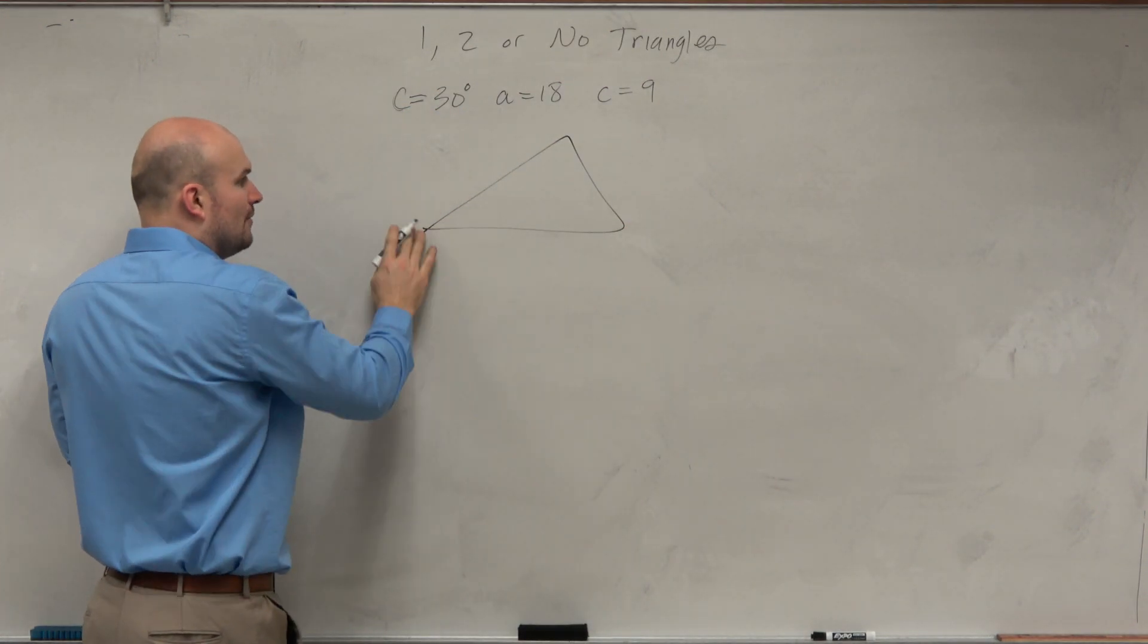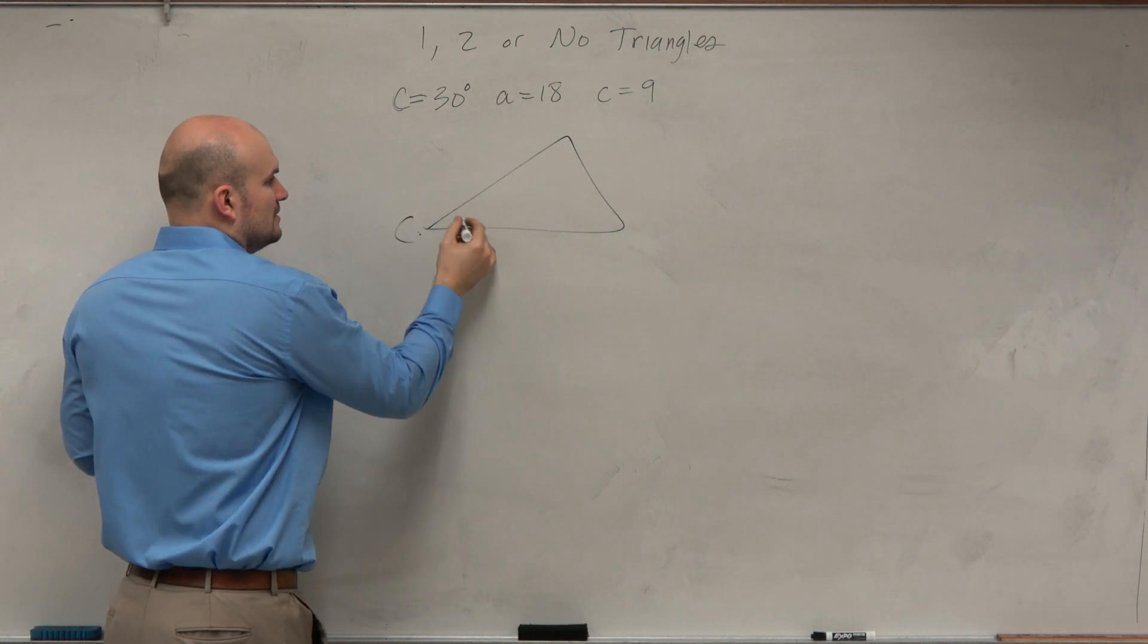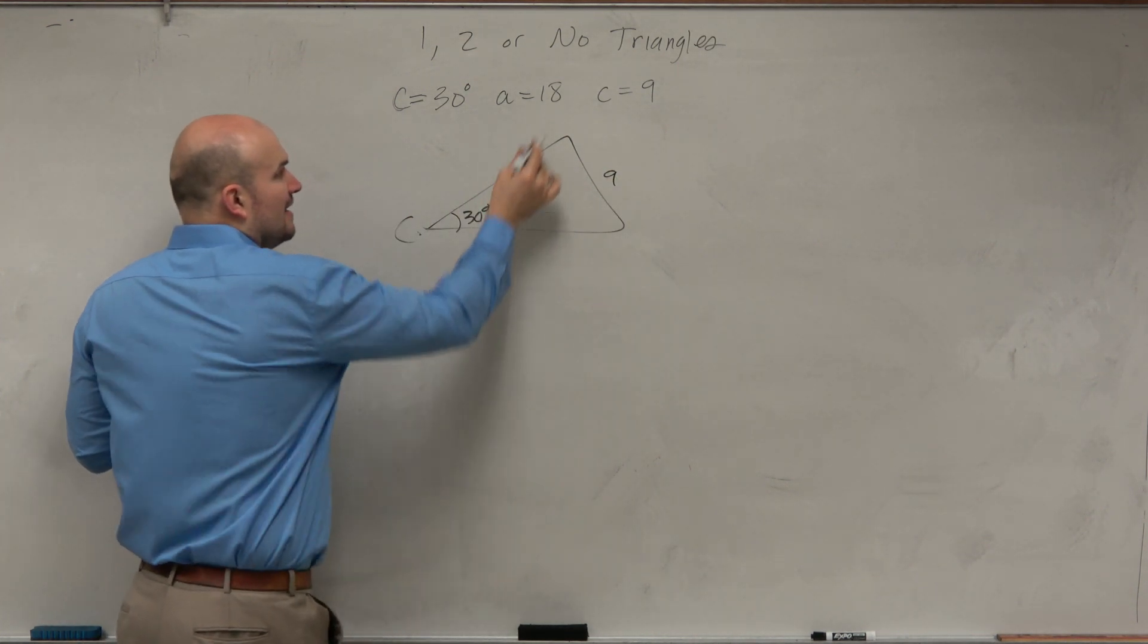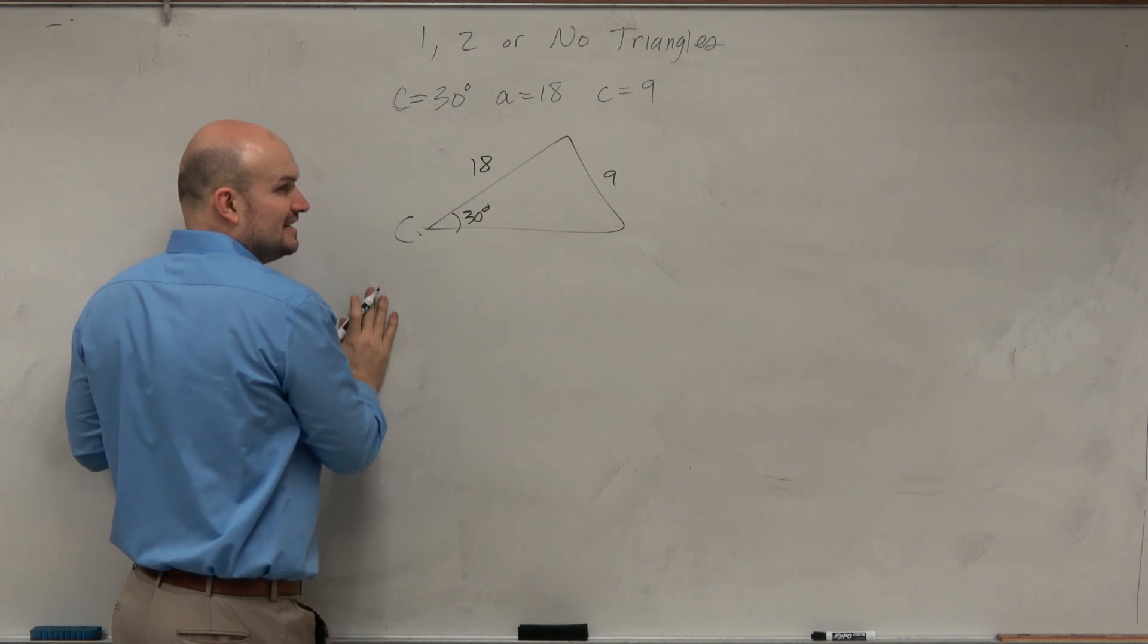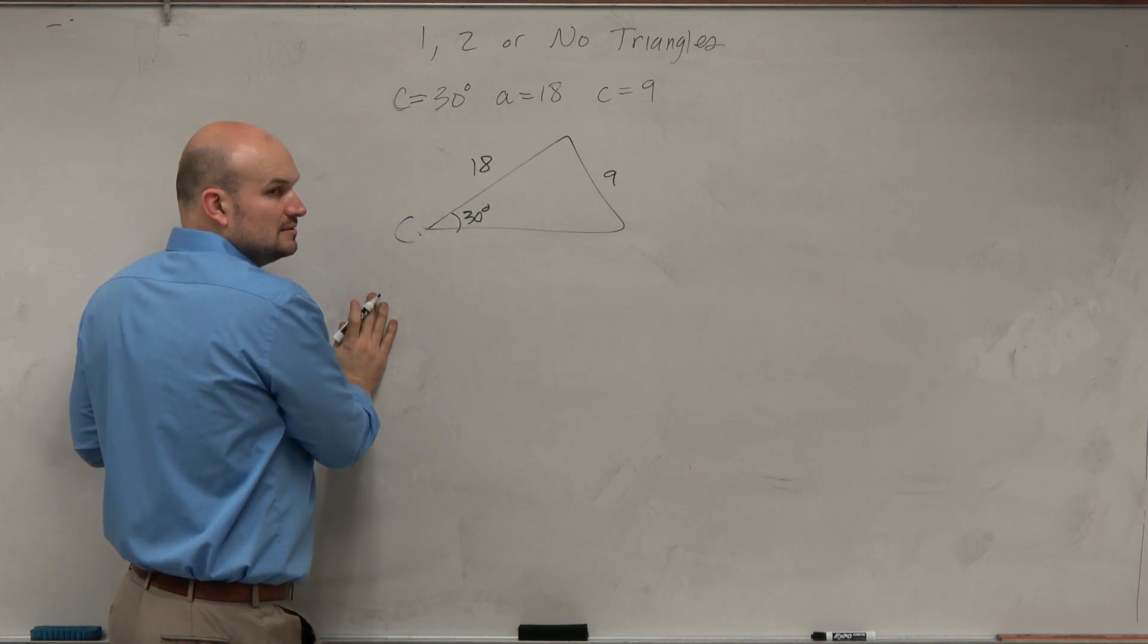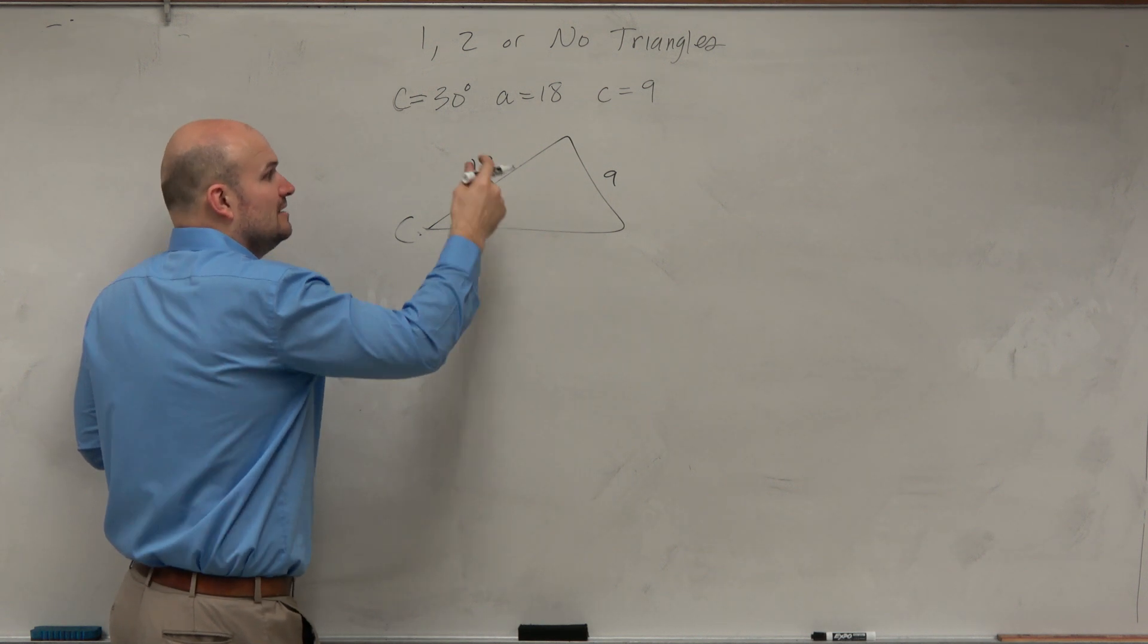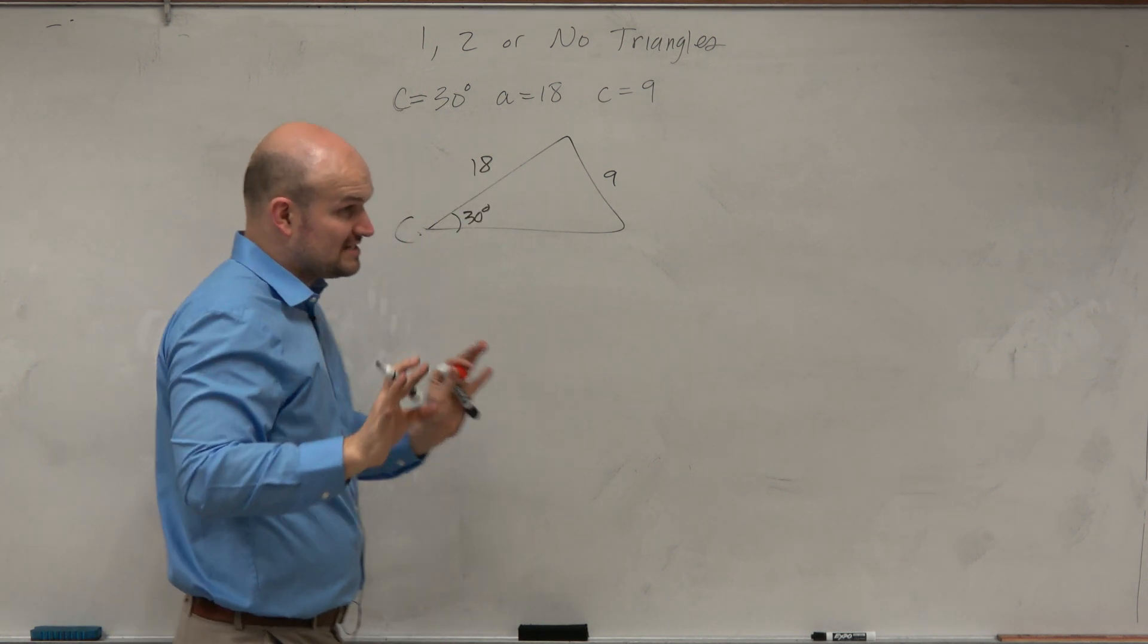I'm going to put the angle that I know here. And therefore, this is 9. And then I want this side length to be 18 here. So by writing it like this, I recognize this to be angle-side-side again. It's an ambiguous case.